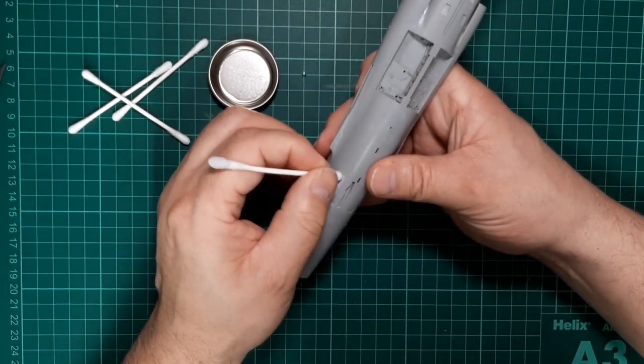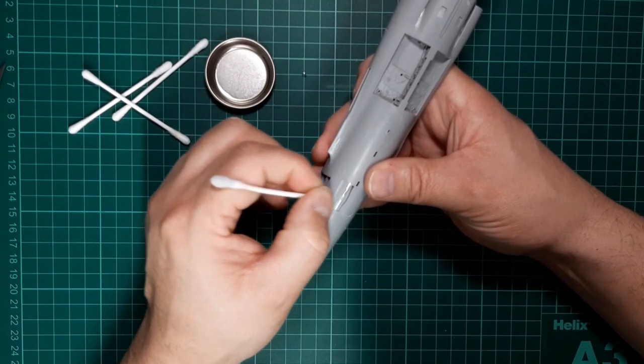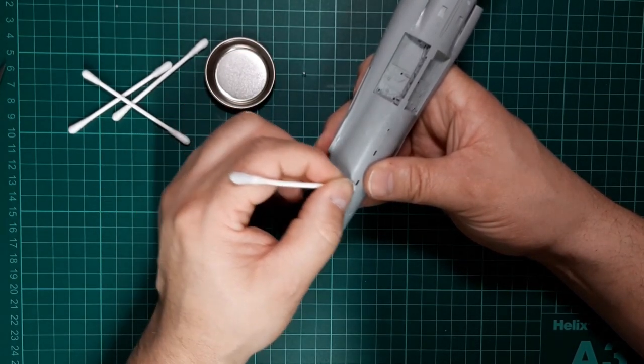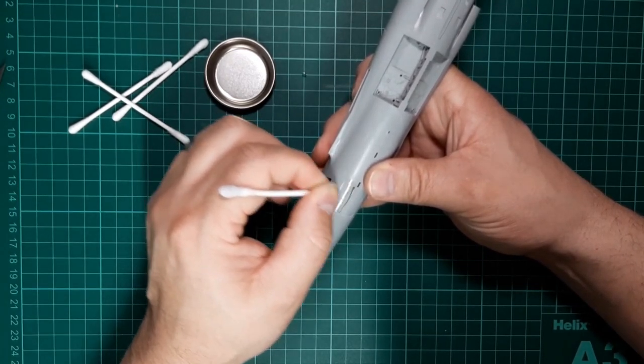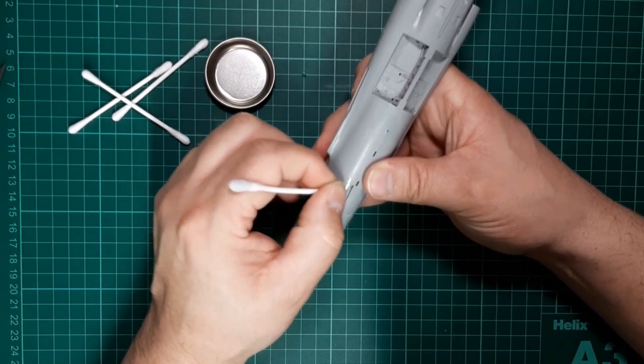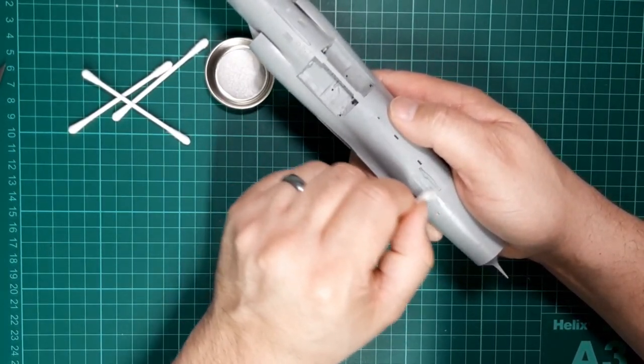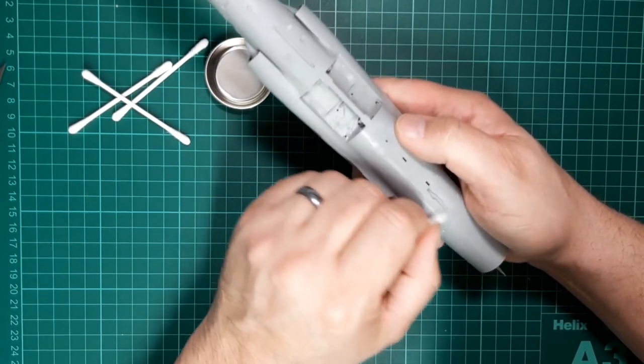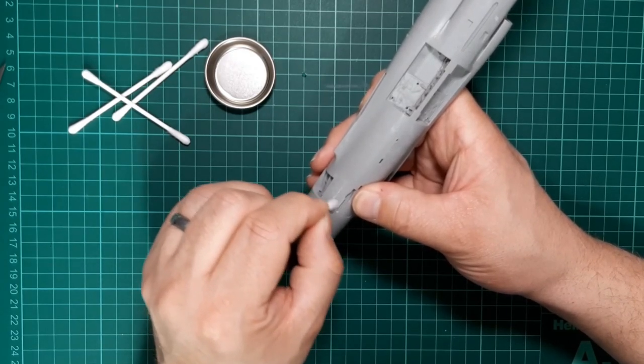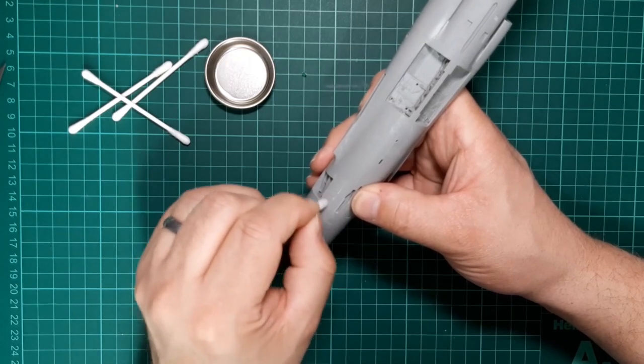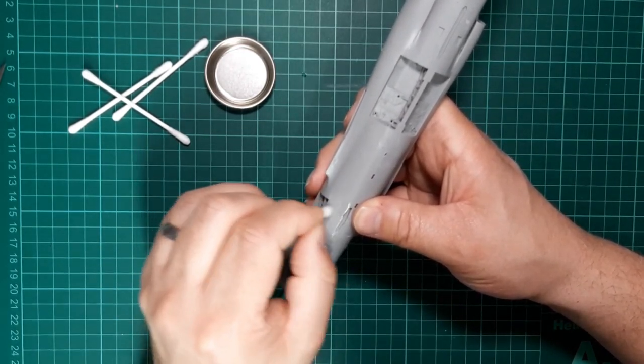It just leaves that minute amount in the defect, making it virtually indistinguishable from the real panel lines. Just working across the seam line. Once that IPA starts biting, it'll start coming off. The good thing with IPA as well is it doesn't attack the plastic. Some people use cellulose thinners or lacquer thinners to do the same job, but the problem with that is it starts attacking the plastic.